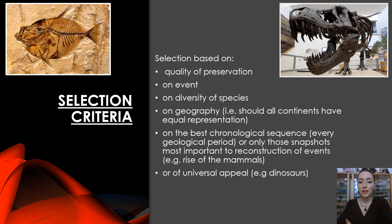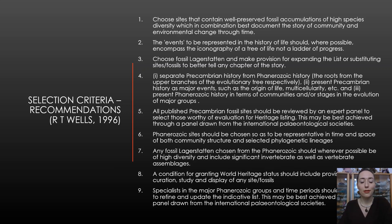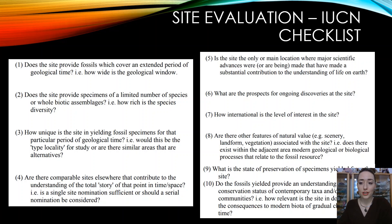There's a debate on what the selection criteria should be based upon: the quality of preservation, the event that caused them to form, the diversity of species present, geography — should all continents have equal representation? Should it be on the best chronological sequence, with every geological period having an equal number of sites? Or should it be on universal appeal — for example, dinosaurs, which everyone loves? Roderick Wells in the 1996 framework recommended nine points on how we can decide on creating a site, covering specific time periods and preservation status.